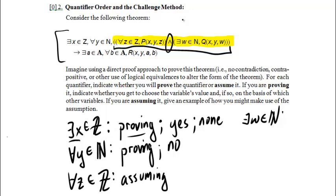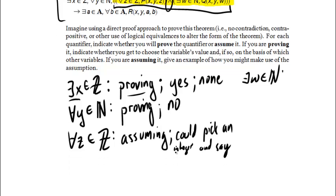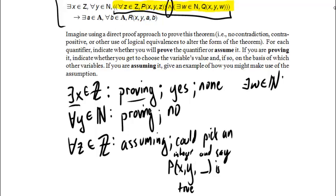Okay, so I'm supposed to give an example. So as an example for z, I could pick an integer and say, let me make myself a little more room here, and say, p of x, y, and that integer is true. Okay, oops. Let me go back up just a little bit so we can see the whole theorem up there.